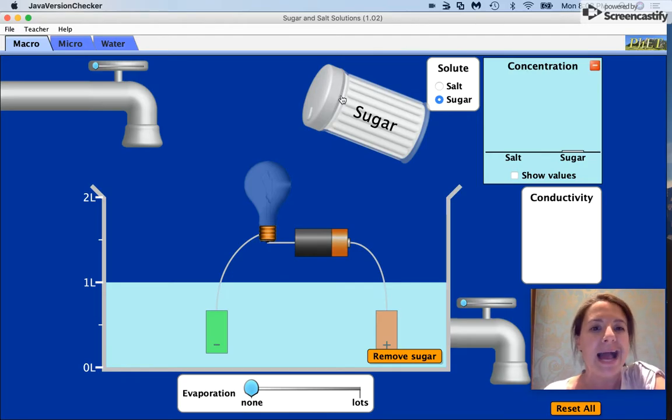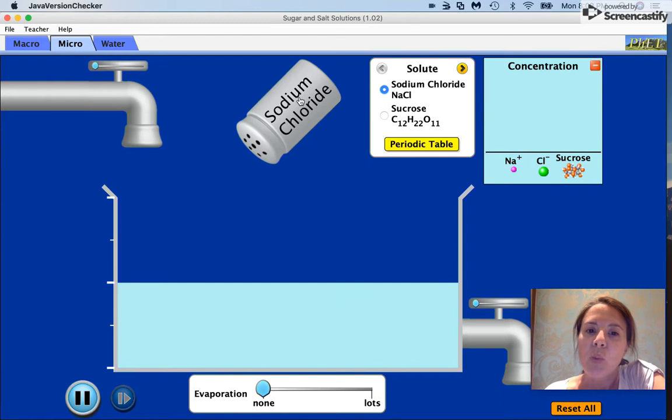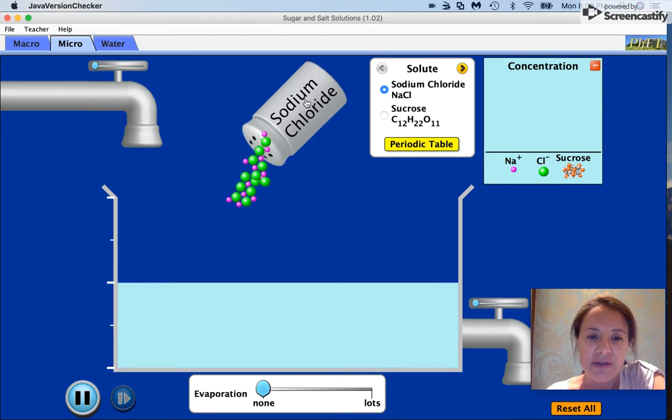So what's happening at the microscopic level? If we had supersonic eyes and we could see what is going on, I'm going to switch my tab. We'll notice that with sodium chloride, when it comes out of the shaker, there is the crystal lattice that we've talked about earlier.